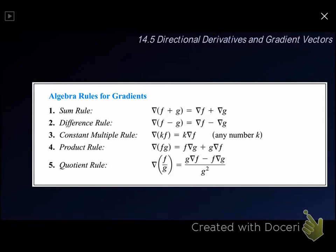Let's say if we have f plus g, and we would like to find the gradient of f plus g. Then this gradient of f plus g can be obtained by taking gradient of f plus gradient of g. Same goes to minus — when you have the gradient for f minus g, it will be the same by taking the gradient of f minus the gradient of g.